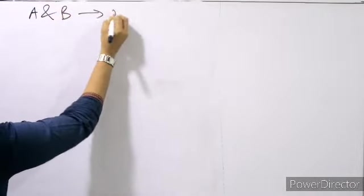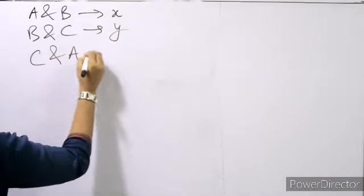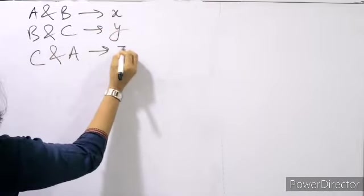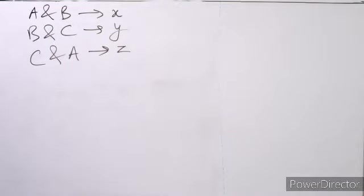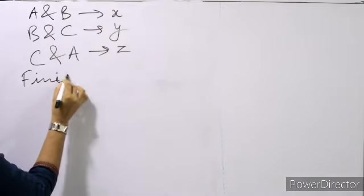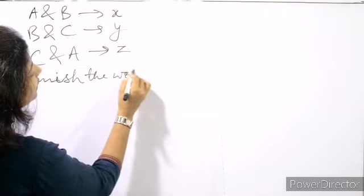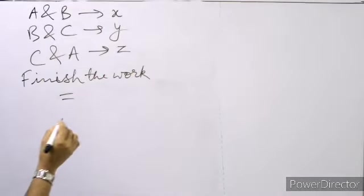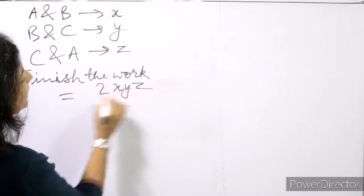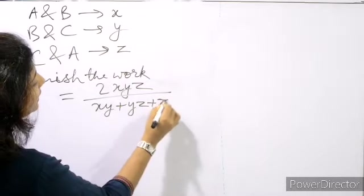If A and B can do a work in x days, B and C can do a work in y days, and C and A can do a work together in z days, then how much time will they take if all three are working together? They'll finish the work in 2xyz divided by xy plus yz plus zx days.